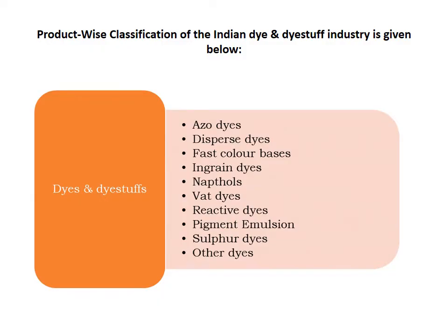Indian industries typically produce the following product categories: azo dyes, disperse dyes, fast color bases, inorganic ingrained dyes, naphthols, vat dyes, and so forth. Some previous slides showed the sulfur dyes and reactive dyes market share for azo dyes and disperse dyes. These are the major types of dyes and dye stuff products which Indian industries produce.